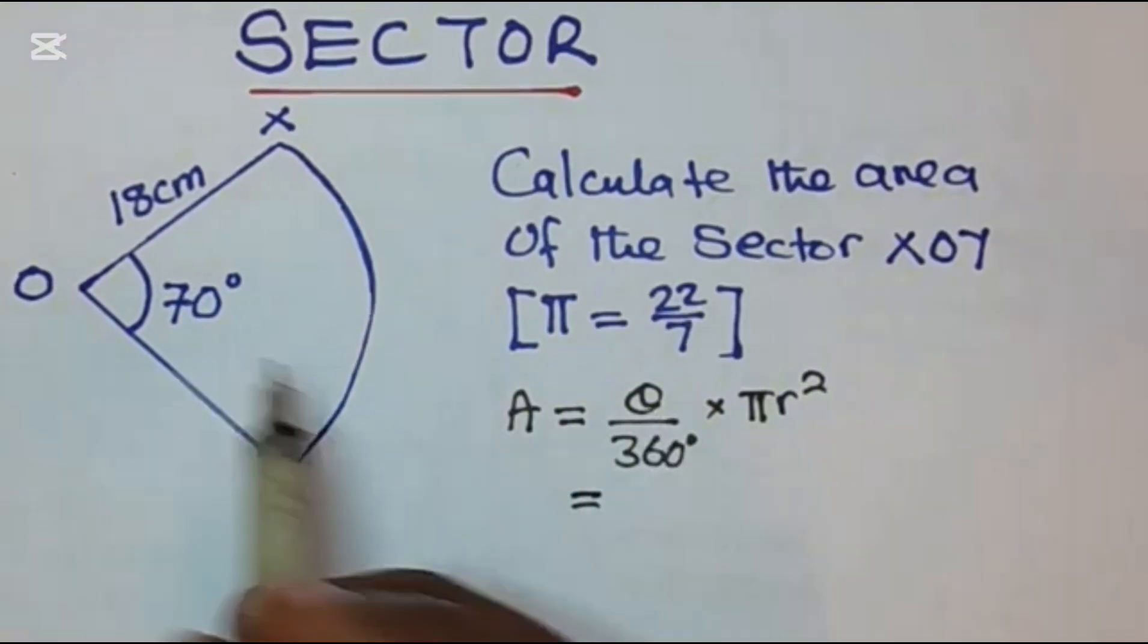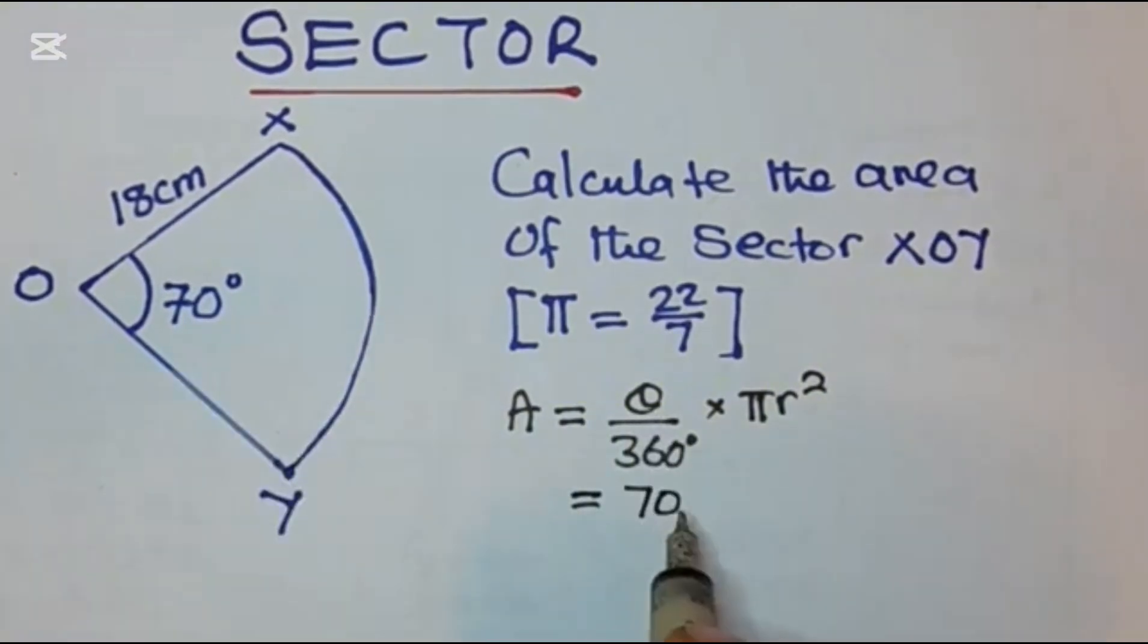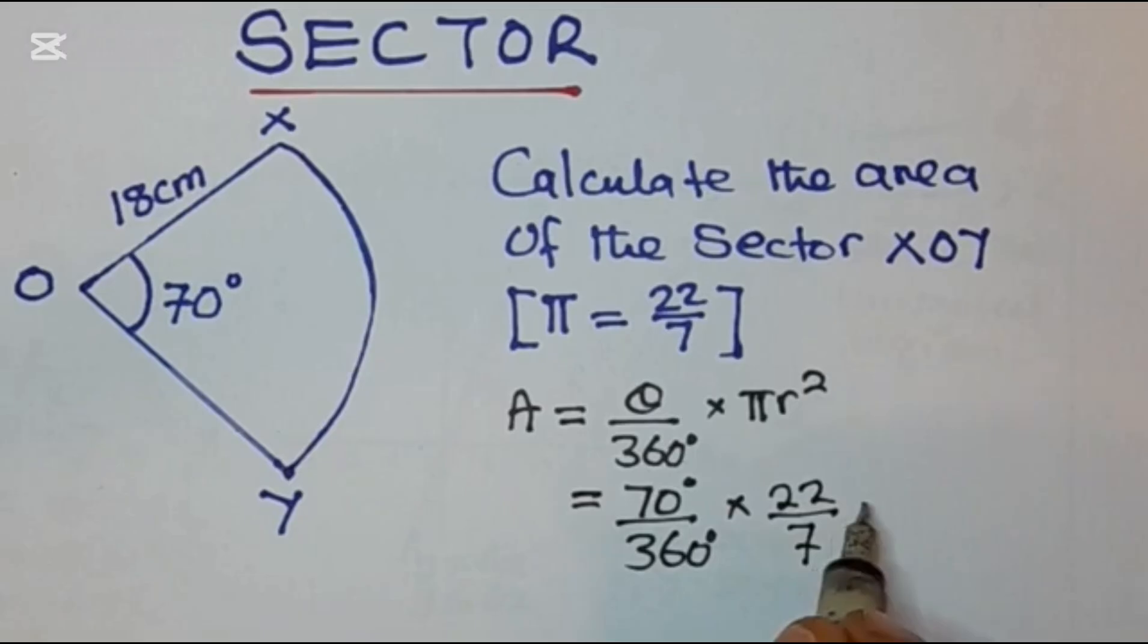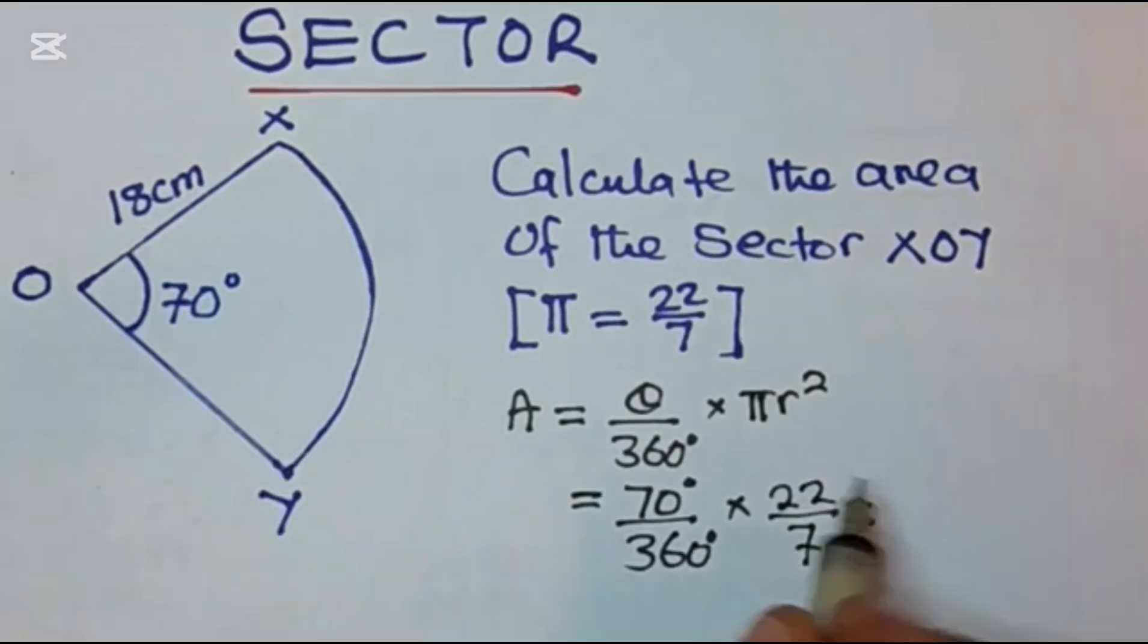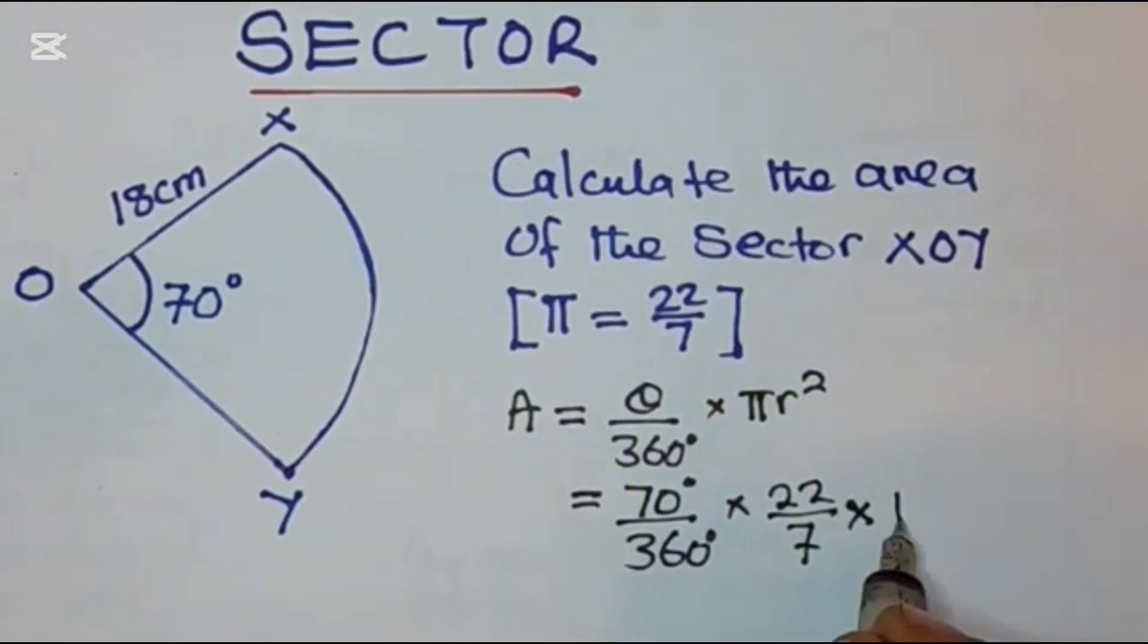Theta here, the central angle is 70 degrees over 360 degrees times pi. We've been told to take pi as 22 over 7 times the radius is 18, so we have 18 squared.